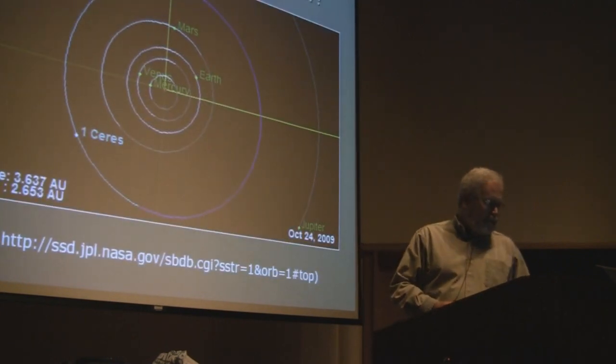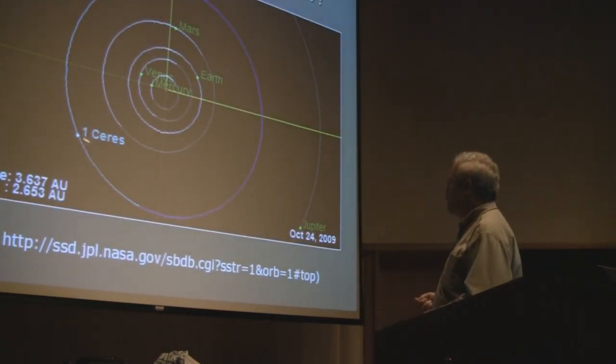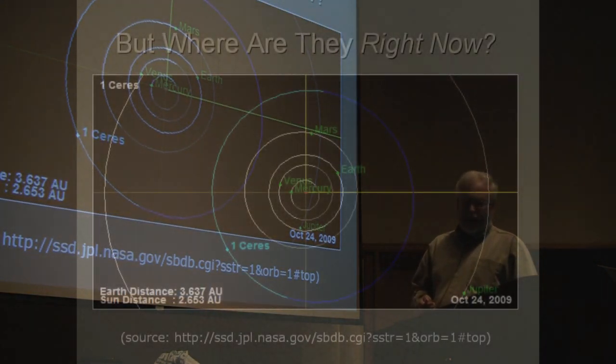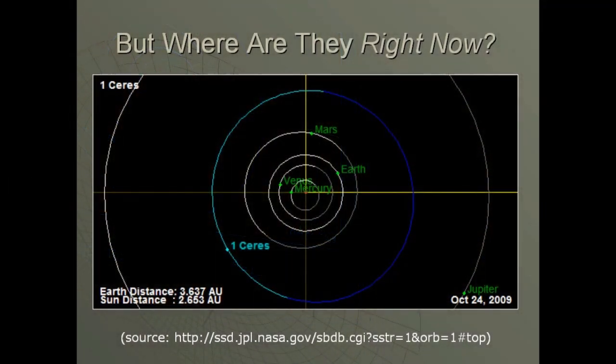Now, this diagram doesn't show the actual present position of the planets, but this one does. And this is where Ceres is right now. It's almost exactly opposite the Sun from us, so we wouldn't be able to see it tonight even if it were clear. The other planets are in these positions as of today. I'll tell you a few things about this diagram. As you can probably tell, we're looking down on the Sun, basically the north pole of the Sun from about a billion kilometers or so.